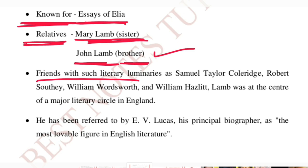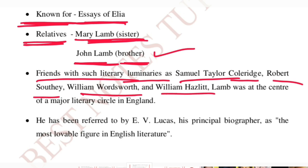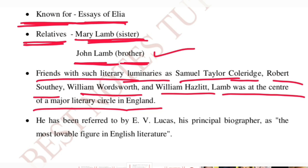Friends with such literary luminaries as Samuel Taylor Coleridge, Robert Southey, William Wordsworth, and William Hazlitt, Lamb was at the center of a major literary circle in England. When you notice these poets' names, you find that all these writers belong to the Romantic period. Charles Lamb also belonged to the Romantic period — specifically the later Romantic period, while the others were from the earlier Romantic period.